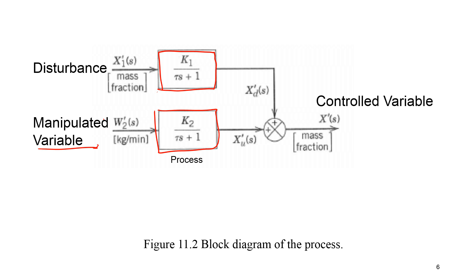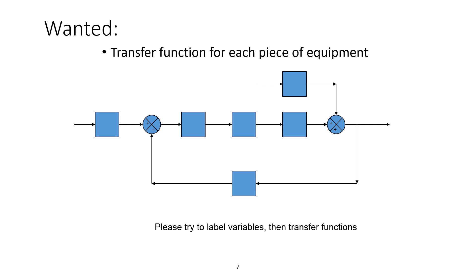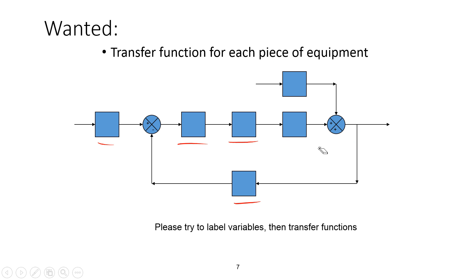W2 is our manipulated variable and X1 is our disturbance variable. The top stream shows how a change in the disturbance would affect a change in concentration — a delta X due to delta X1 or delta X2. We combine those to get the total mass fraction change due to disturbances or manipulated variables. But we also want a transfer function for each piece of equipment in our overall process, not just the process and the disturbance.